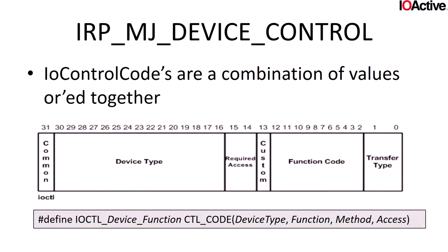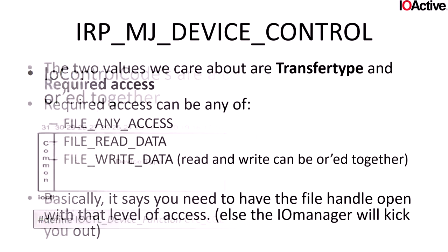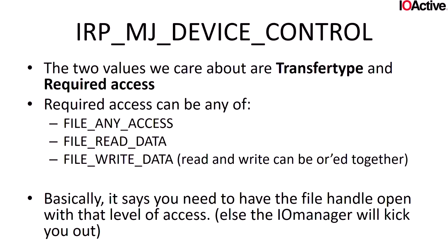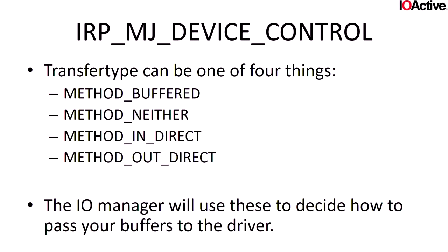The IO control code, even though it looks like just a number, is split into several bit fields. From a security perspective we care about two: the required access and the transfer type. Required access is one of three values: FILE_ANY_ACCESS, FILE_READ_DATA, and FILE_WRITE_DATA. If you open a handle as read-only but issue an IoControl requiring FILE_WRITE_DATA, the IO manager rejects it — restricting you to the required access.